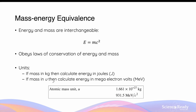Sometimes the mass can be very small and be written in u, which is atomic mass units. One atomic mass unit is equivalent to 1.661 × 10⁻²⁷ kilograms. If the mass is available in atomic mass units, we can simply convert it into mega electron volts instead of joules by multiplying by 931.5. We'll go through the unit conversions in a moment.